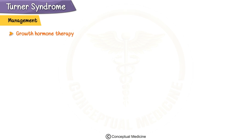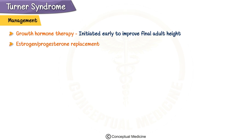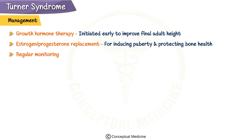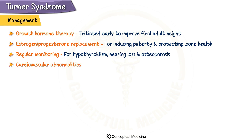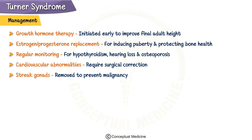Management of Turner syndrome involves a multidisciplinary approach. Growth hormone therapy should be initiated early to improve final adult height, while estrogen and progesterone replacement are essential for inducing puberty and protecting bone health. Regular monitoring for associated conditions such as hypothyroidism, hearing loss, and osteoporosis is critical. Cardiovascular abnormalities often require surgical correction, and streak gonads must be removed to prevent malignancy.